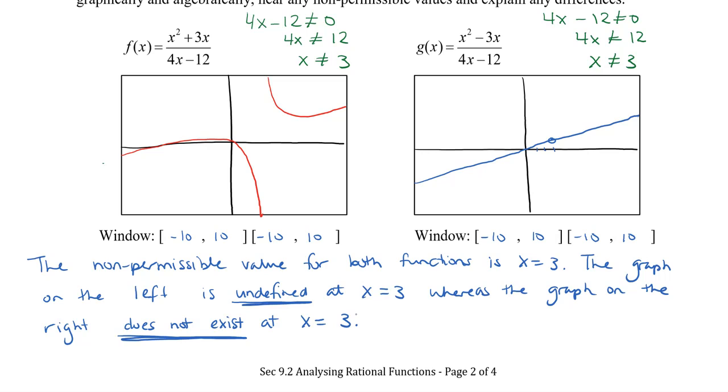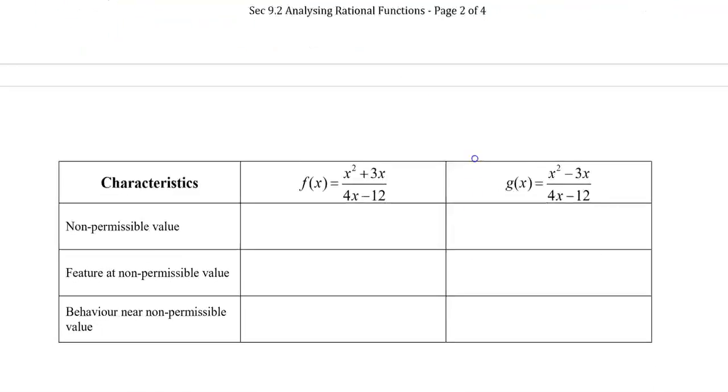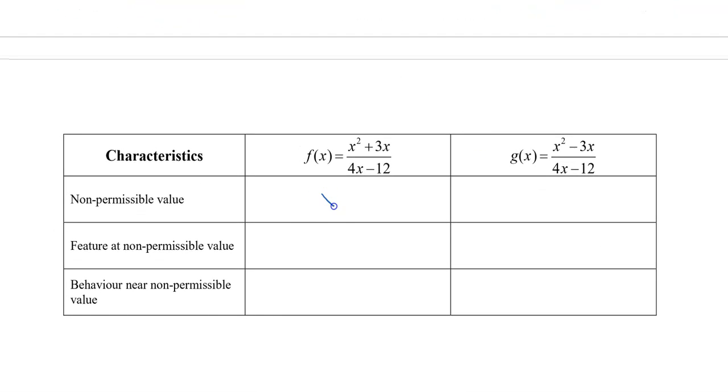Let's take a look at a little bit more of the characteristics of the graph. So we notice that the non-permissible values for both is x equals 3. When we take a look at this first graph, the one on the left, the non-permissible value creates a vertical asymptote. Whereas the graph on the right creates a point of discontinuity. So let's fill in this chart here. The non-permissible value for both is x equals 3. The feature for the left one was a vertical asymptote. Whereas the feature for the second one was a point of discontinuity.